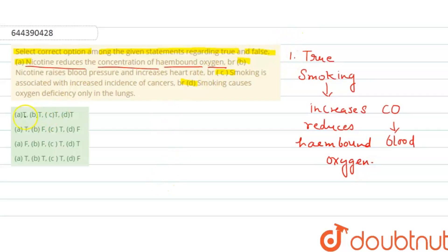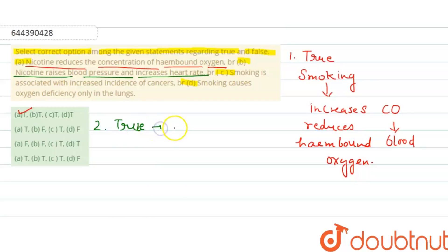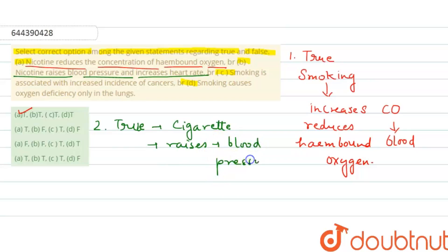The second statement is that nicotine raises blood pressure and increases heart rate — this is also true. Nicotine present in cigarette smoke raises your blood pressure and also increases the heart rate. So this is also true.